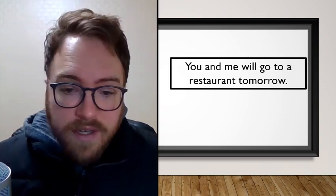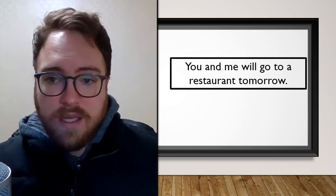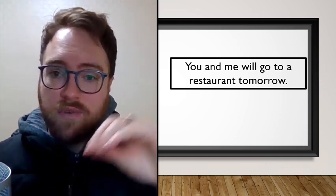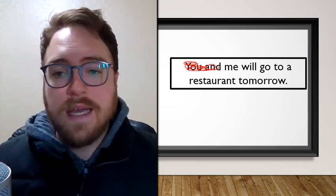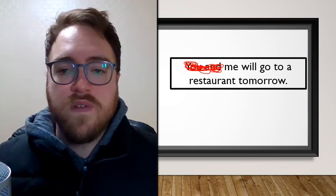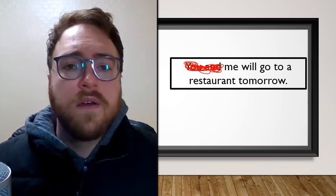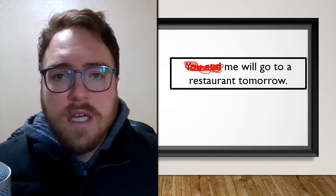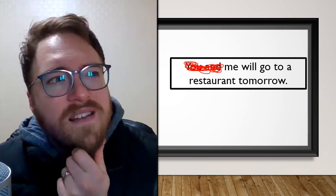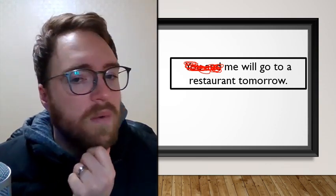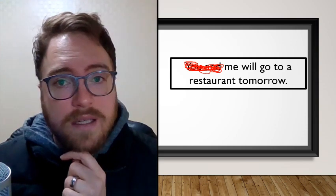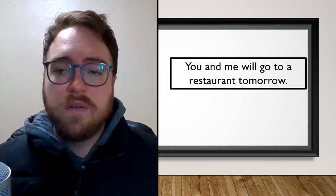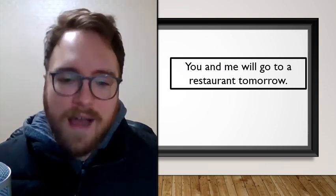Now try the same with 'You and me will go to a restaurant tomorrow.' Remove 'you and' and you're left with 'Me will go to a restaurant tomorrow.' Does that make sense? No — we can't speak like that in English. So 'you and me will go' is incorrect.